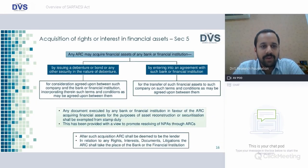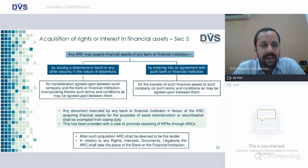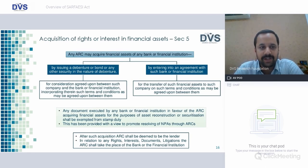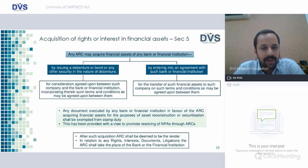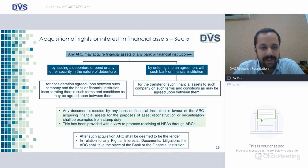Section 5 speaks about acquisition of rights or interest in financial assets. ARC may acquire financial assets of any bank or financial institution — one, by issuing a debenture or bond or any other security; or two, by entering into an agreement with such bank or financial institution. After such acquisition, the ARC shall be deemed to be a lender in relation to any rights, interest, documents, or litigation, and the ARC shall take the place of the bank or financial institution.